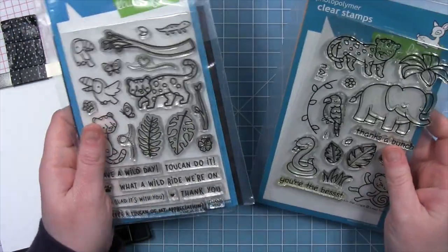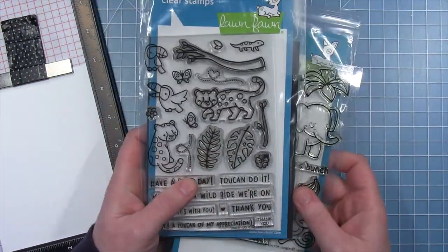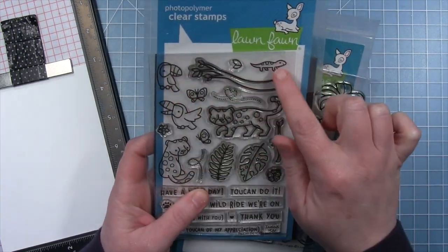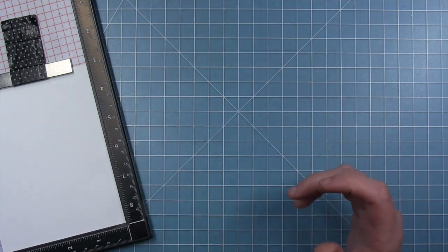First, I'm going to start by stamping out my images. I'm creating a jungle scene, so I'm using that little monkey from Critters in the Jungle, as well as the toucans, the jaguar, and the little lizard from Toucan Do It.